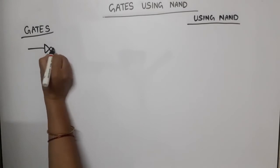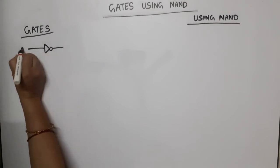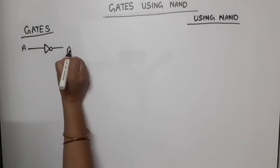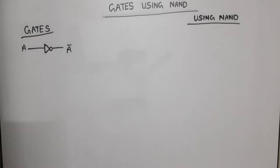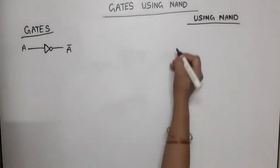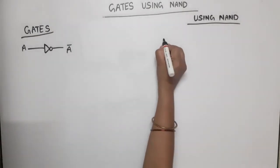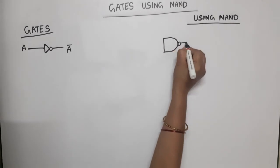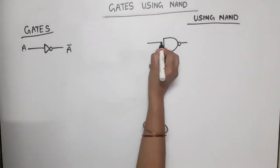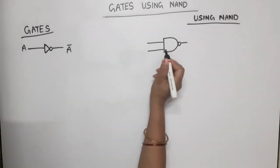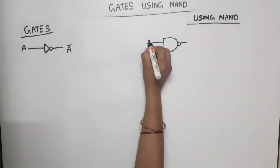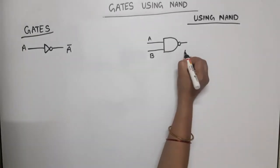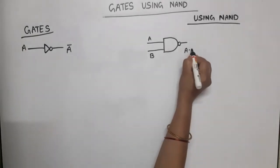This is NOT gate. Input of NOT gate is A, output is A bar. The gate available is NAND gate. The NAND gate has first input A and second input B, and output is A dot B bar.